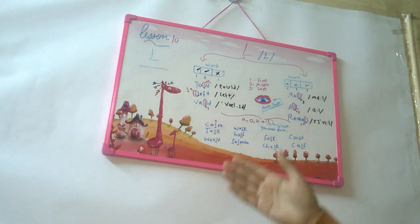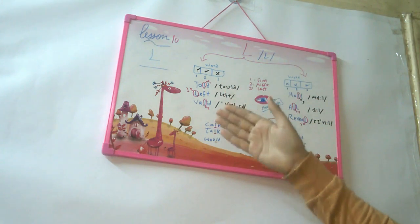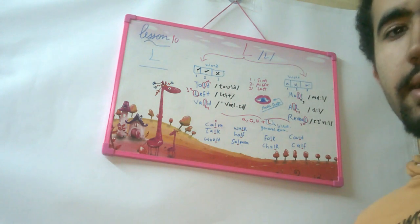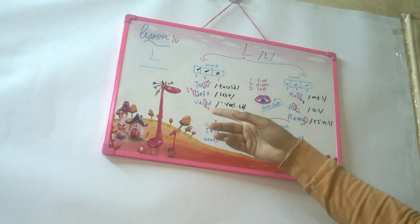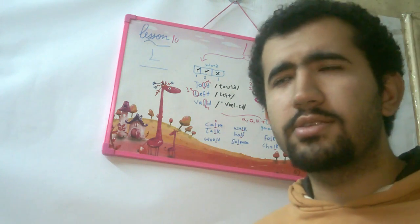So we have the first or the second position have the same pronunciation. Light L. Okay? So we have told, left, and valid. The L is soft here. It's not heavy. Okay?